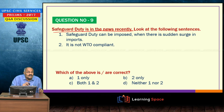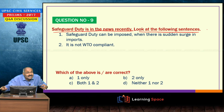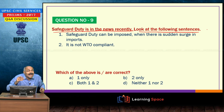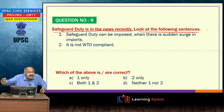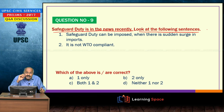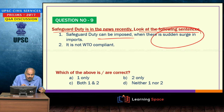Safeguard duty is in the news recently. Anti-dumping duty is imposed when imports come to the country at less than market rate. Countervailing duty or anti-subsidy duty is imposed when products being imported enjoy several subsidies in the country of manufacture. Safeguard duty is a temporary measure imposed when there is a sudden increase in imports causing injury to the domestic industry. All three duties are WTO compliant.